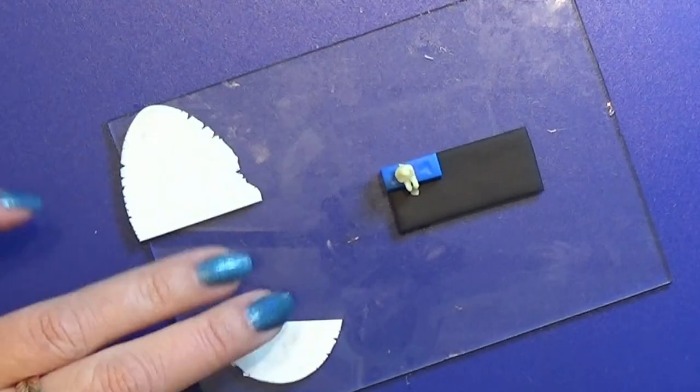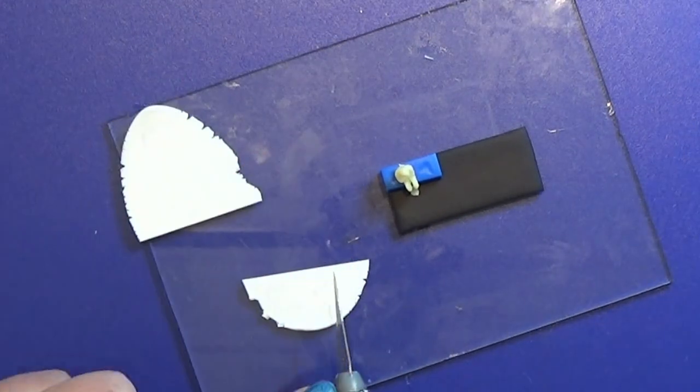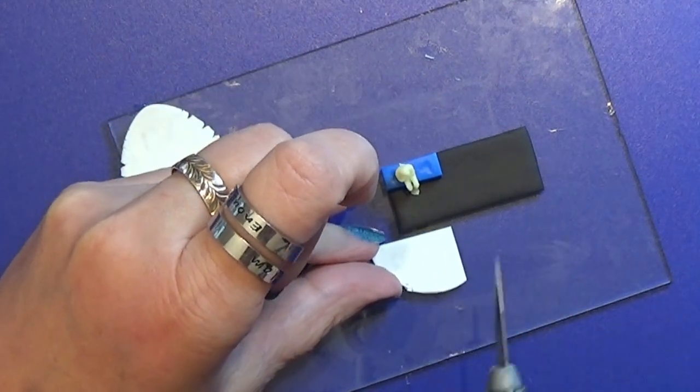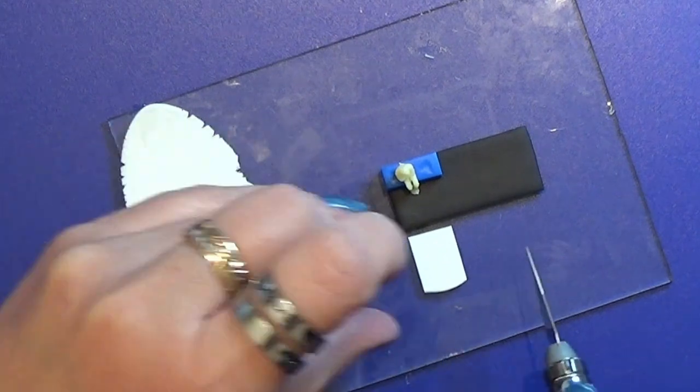I rolled out a piece of white clay on a very thin setting and from that I'm going to cut out a tiny table to stand in front of the couch.